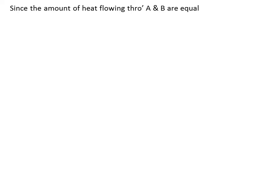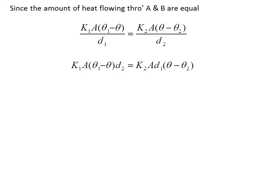Since the amount of heat flowing through A and B are equal, we can equate them: K1 times A times (theta 1 minus theta) divided by D1 is equal to K2 times A times (theta minus theta 2) divided by D2. Simplifying, D1 and D2 can be taken to the other side.